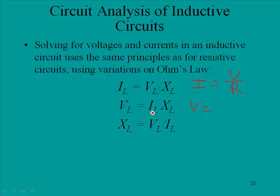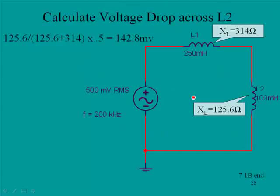Voltage equals current times XL, so that would be current times resistance in Ohm's law. And XL equals VL over IL, which in Ohm's law would be resistance equals voltage divided by current.